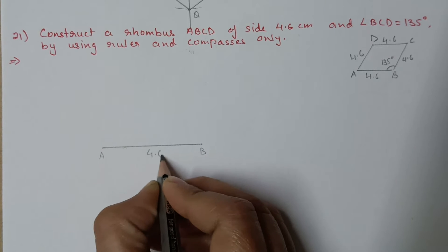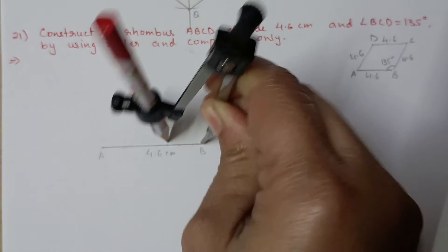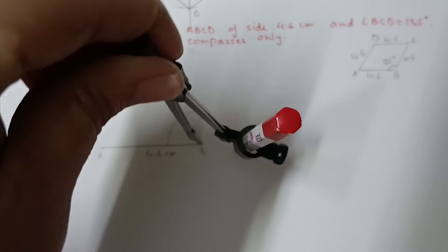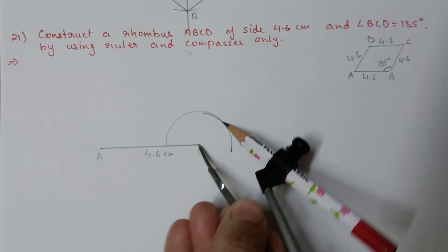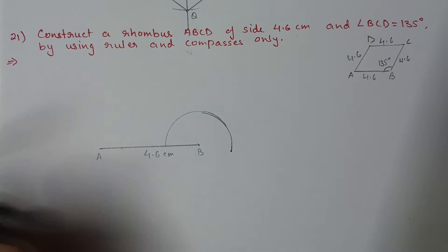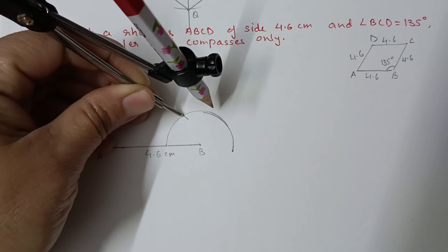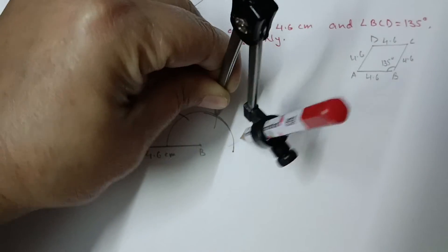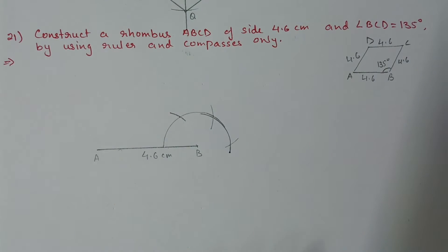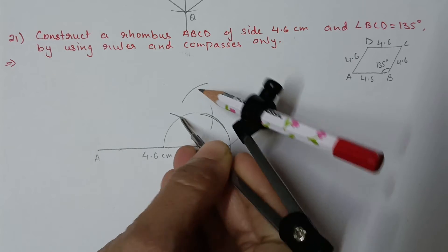At B we have to construct a 135 degree angle. First draw a semicircle, then first arc at 60 degrees, second arc at 120 degrees, third arc at 180 degrees — we need 180 also. Then draw the 90 degree angle, which comes between 60 and 120.